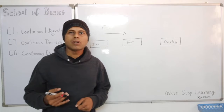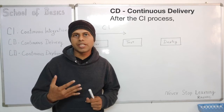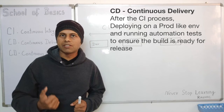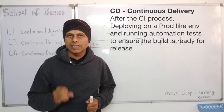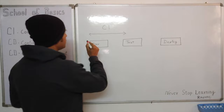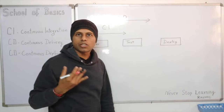After the CI process, if we also do a deployment on a production-like environment — it can be a QA or a staging environment — and then run some automated tests to ensure that this build is ready to be deployed, we call this process Continuous Delivery. The goal of Continuous Delivery is to make sure the build is always in a deployable state. Continuous Delivery expands from dev until the testing or QA phase.